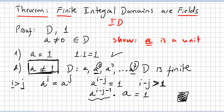This concludes the proof, because we proved that a is a unit. So any arbitrary element in the finite integral domain is a unit, and since all elements are units, that is the definition of a field — a commutative ring with unity where every non-zero element is a unit. Therefore the finite integral domain is a field.